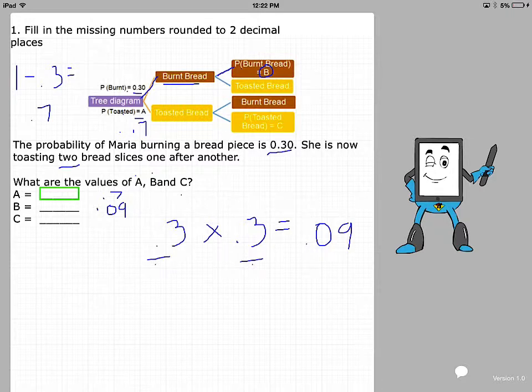Next, let's find C. If we follow the tree diagram, we have a toasted bread, and then another toasted bread. So in this case, we'll multiply the probability for toasting bread, and that's 0.7 times 0.7, and that gets us 0.49. So that's the probability of getting two pieces of toasted bread.